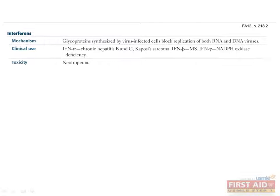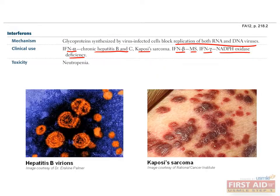Interferons are glycoproteins synthesized by virus-infected cells that block the replication of both RNA and DNA viruses. Interferon alpha is used for chronic hepatitis B and C and Kaposi's sarcoma. Interferon beta is used for multiple sclerosis, and interferon gamma is used in patients with NADPH oxidase deficiency.